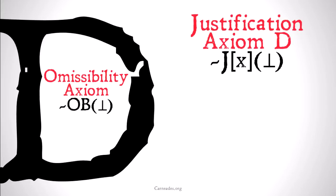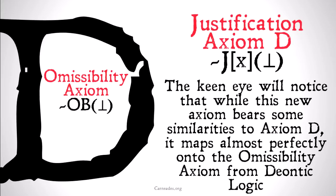The keen eye is going to see that while this bears some similarity to axiom D, it maps almost perfectly onto the omissibility axiom from deontic logic. If you want more information on the differences between axiom D and the omissibility axiom in deontic logic, check out my previous video from October on the different kinds of deontic contradictions. We're going to call this justification axiom D because we don't have a similar corollary to the deontic axiom D that maps perfectly onto our other axiom Ds.